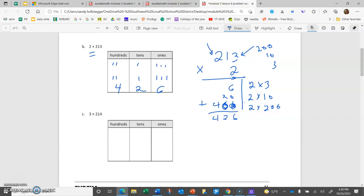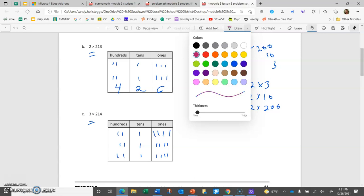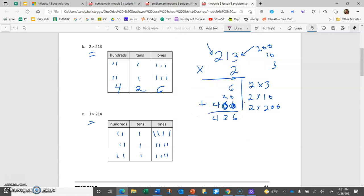If I do the same thing for letter C, 214 and we're multiplying that by 3. So I need to show 214 three times. Now I'm going to try to bundle by making groups of 10. So I will start in my ones place. I see that I have 4, 8, 12 ones. So I'm going to take 10 of them, bundle, and trade it in for a 10.